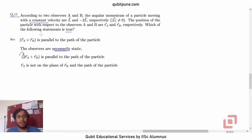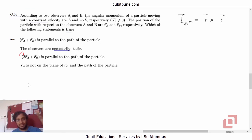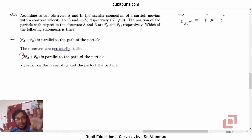To begin with, let us recall the definition of angular momentum of a particle: L̄ = R̄ × P̄, where P̄ is the momentum of the particle. Now, option B says the observers are necessarily static, so let us relax that condition and see whether we can still frame a situation where all the given requirements are met. So option B will automatically be gone.